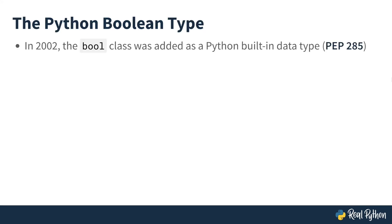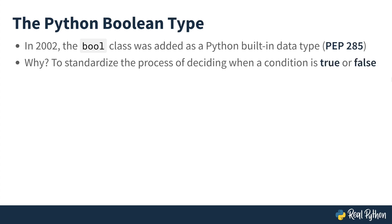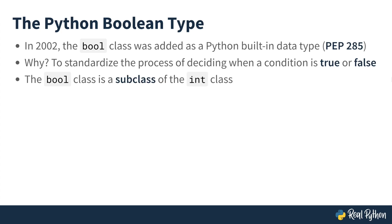It wasn't until 2002 that the Boolean class was added, and if you're interested in knowing what the thought process was when adding the class, check out PEP 285. One of the main reasons why the Boolean class was added was to standardize the process of deciding when a condition is either true or false. The Boolean class is implemented as a subclass of the integer class, and so it inherits all of the mathematical operations that exist in the integer class.